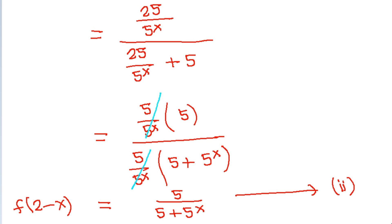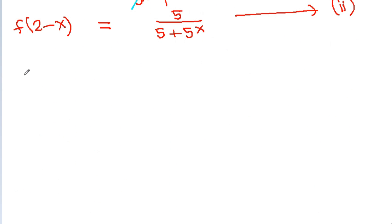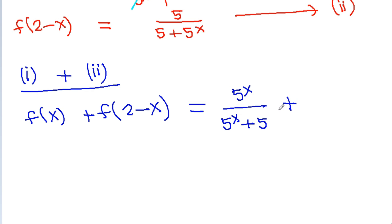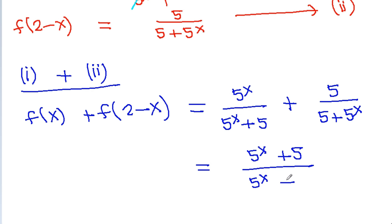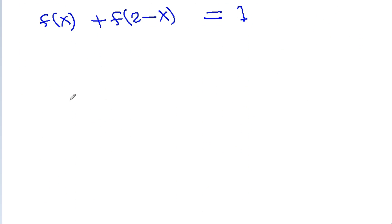Let this be equation 2 and the original be equation 1. If we add equation 1 and equation 2, we get f(x) + f(2 - x) = 5^x/(5^x + 5) + 5/(5 + 5^x) = (5^x + 5)/(5^x + 5) = 1.